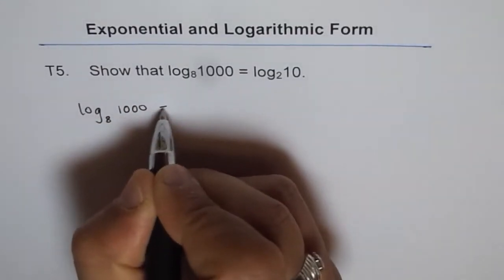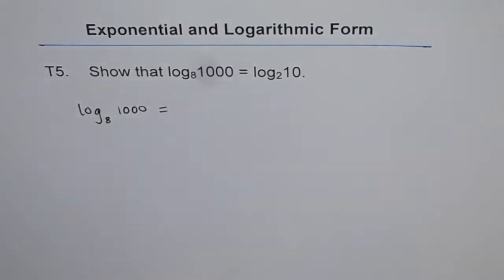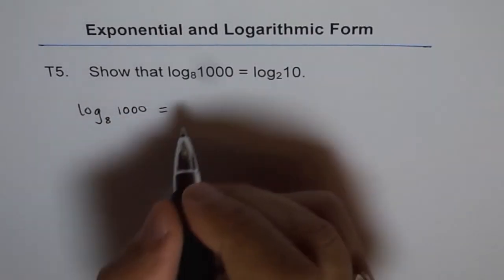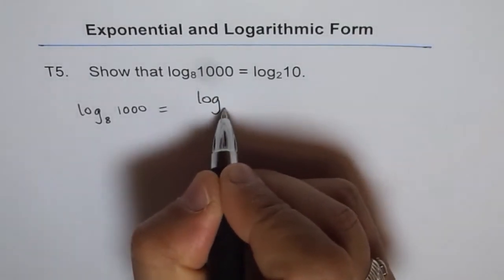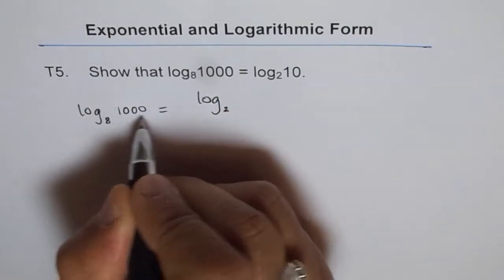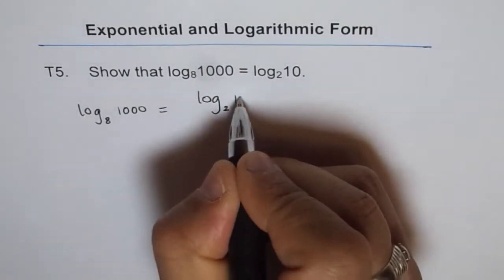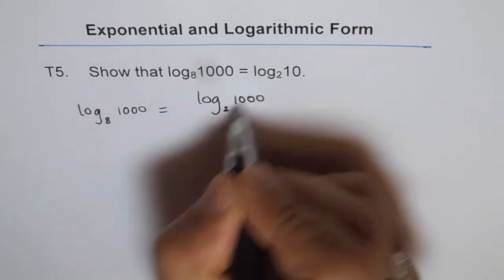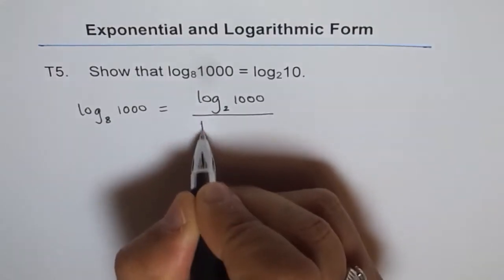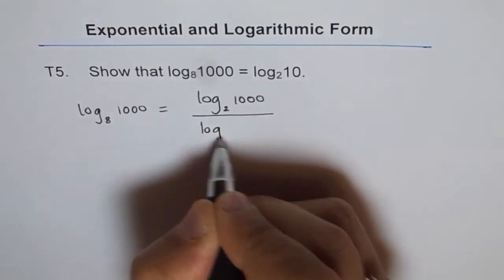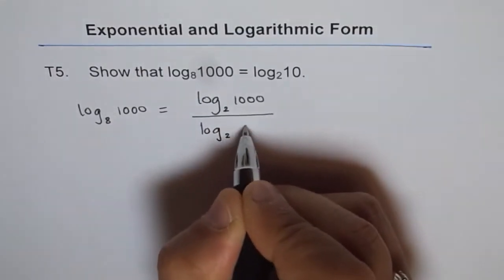So let's change the base to 2. In that case, we get log to the base 2 of 1000 divided by log to the base 2 of 8.